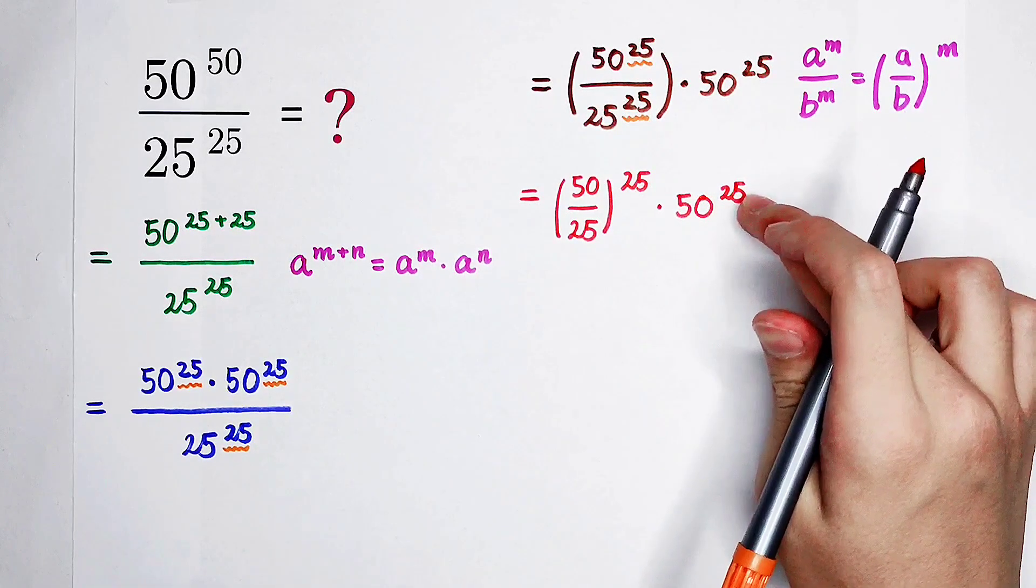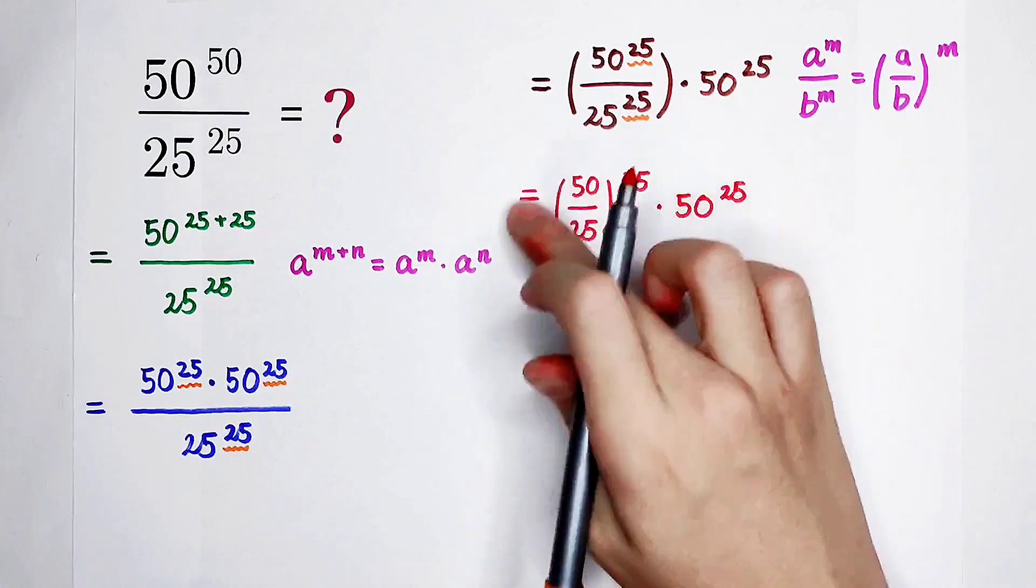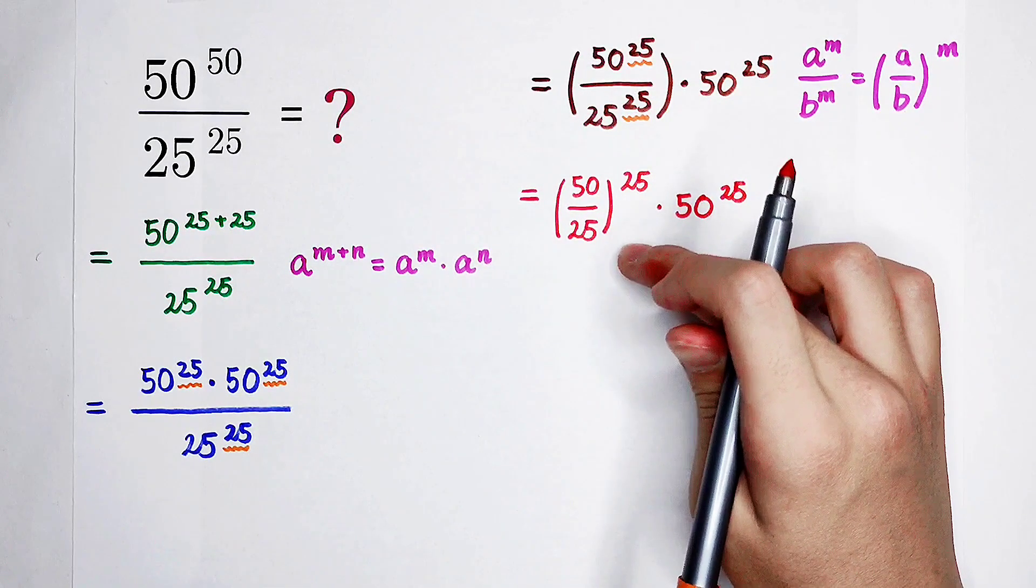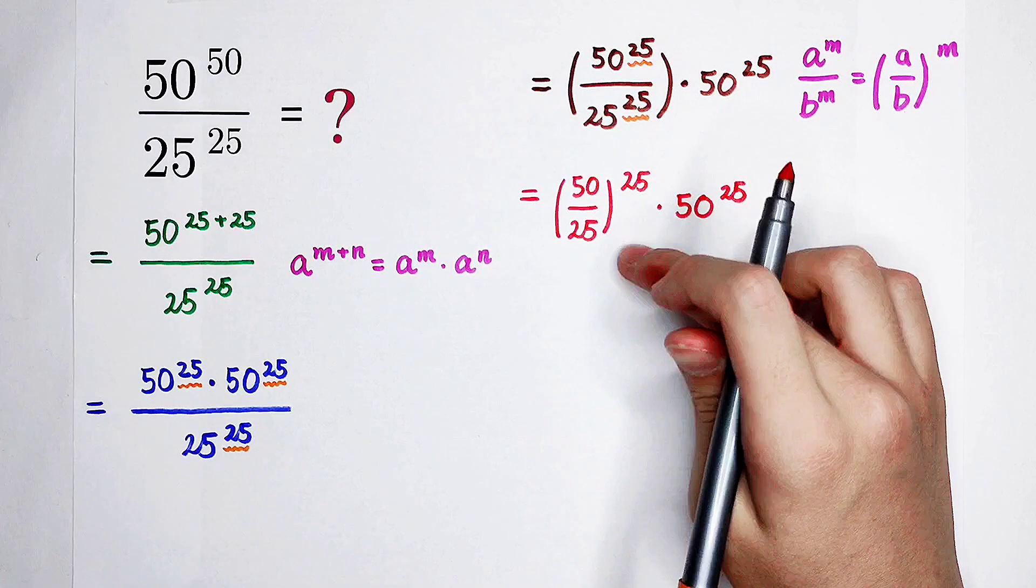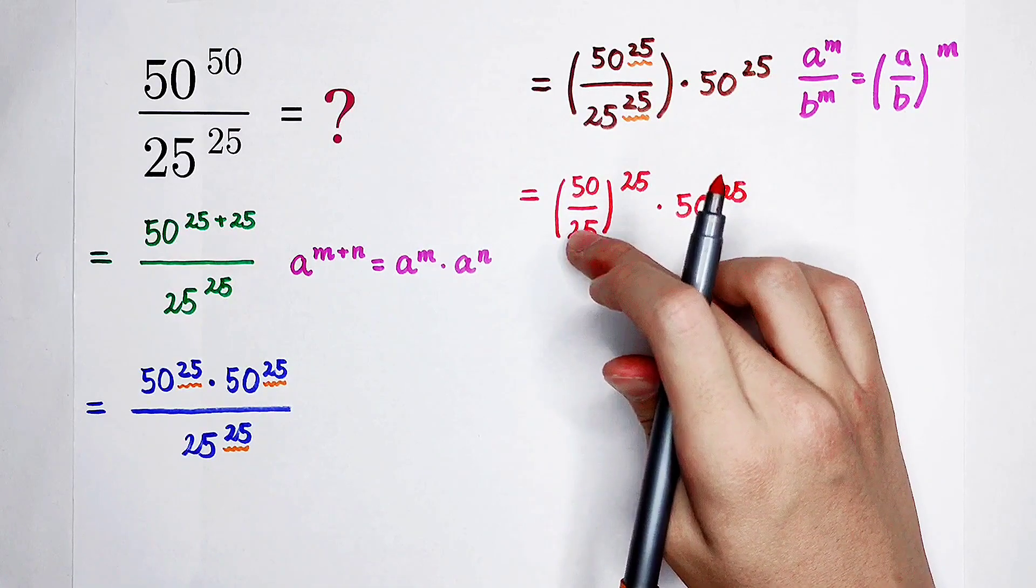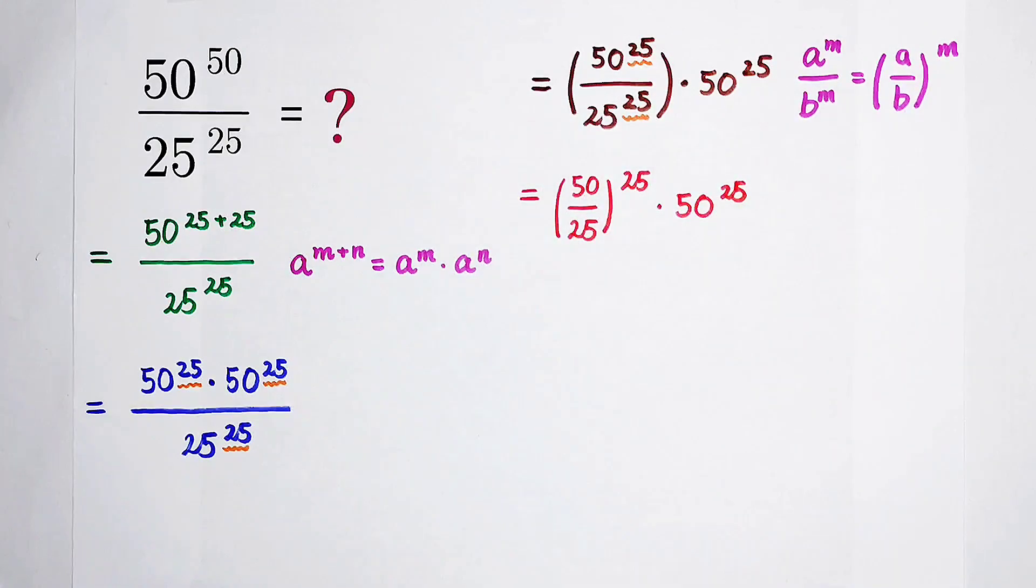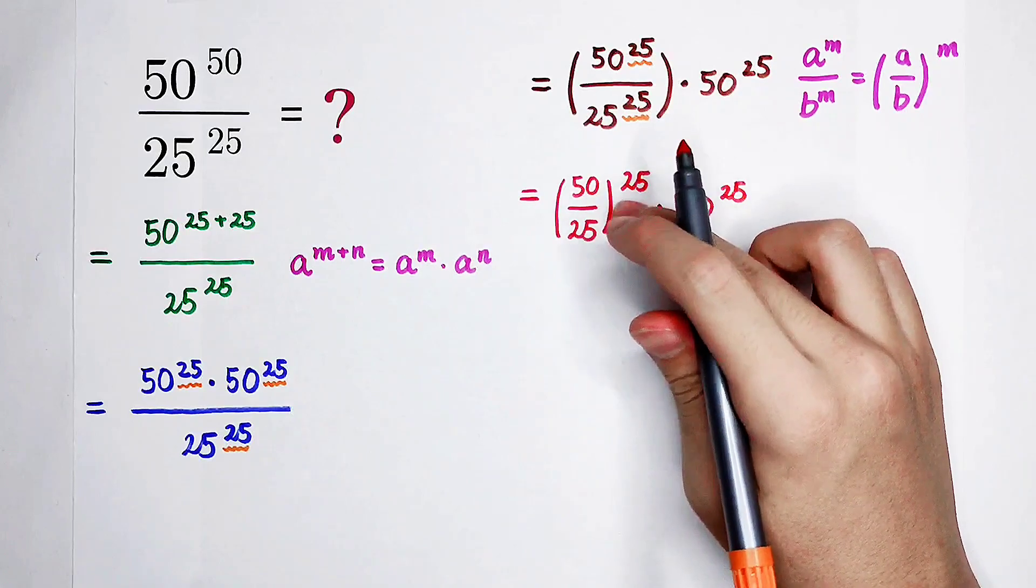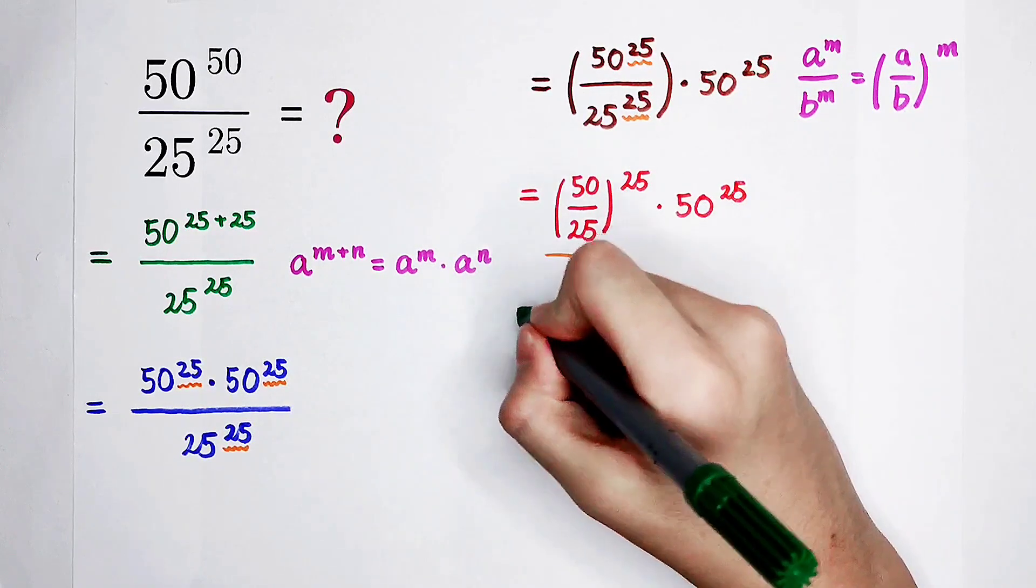This number, although it is very huge, please ignore. Just pay attention to this guy. 50 divided by 25. We've already said that 50 and 25, they have a very good relationship. 50 divided by 25, that is, 50 is 2 times 25. That means the value of this fraction is 2.